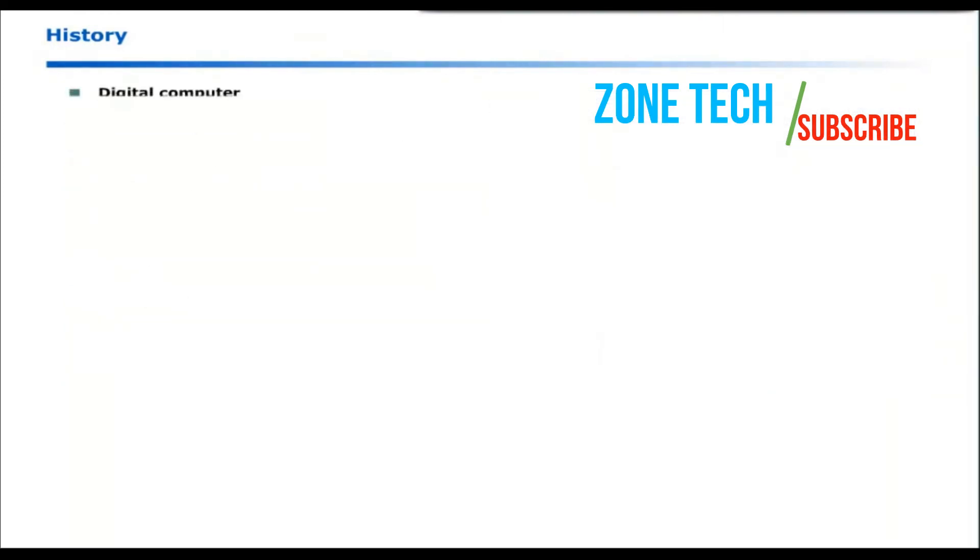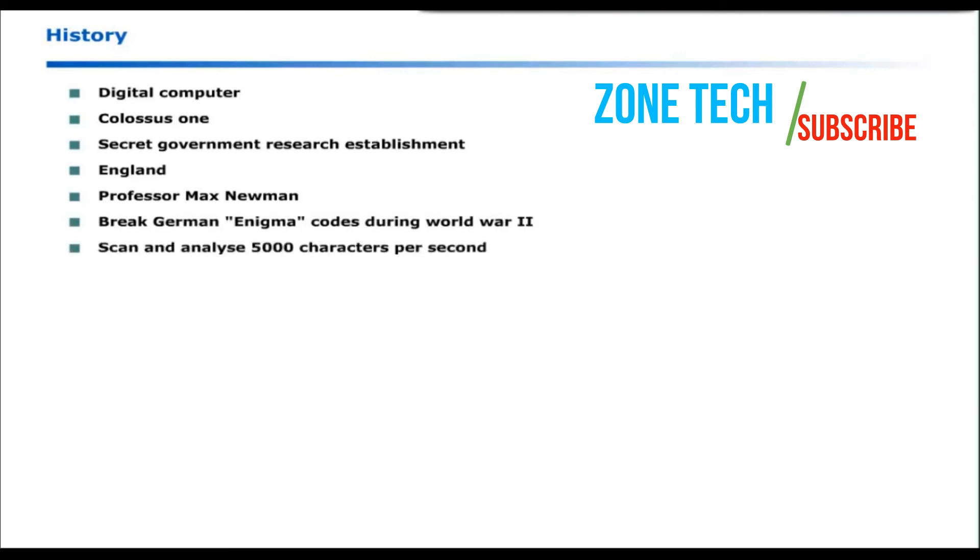Another important digital computer in history was Colossus I. It was built at a secret government research establishment in England under the direction of Professor Max Newman. It was designed to break German Enigma codes during World War II. It could scan and analyze 5000 characters per second. Colossus became operational in December 1943 and proved to be one of the most important technological aids to victory in World War II.